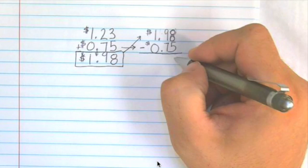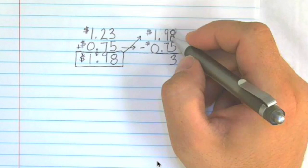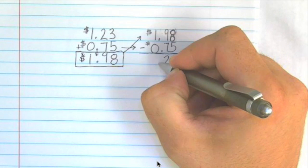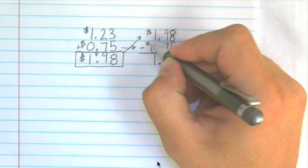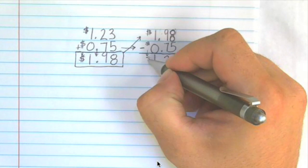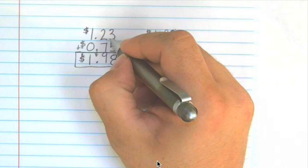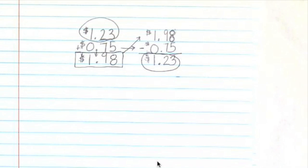So 8 subtract 5 is 3, 9 subtract 7 is 2, drop that decimal point down. And 1 subtract 0 is 1, drop the dollar sign down. We have $1.23 and that is what we have up here. So using the inverse operation, we know our answer is correct.